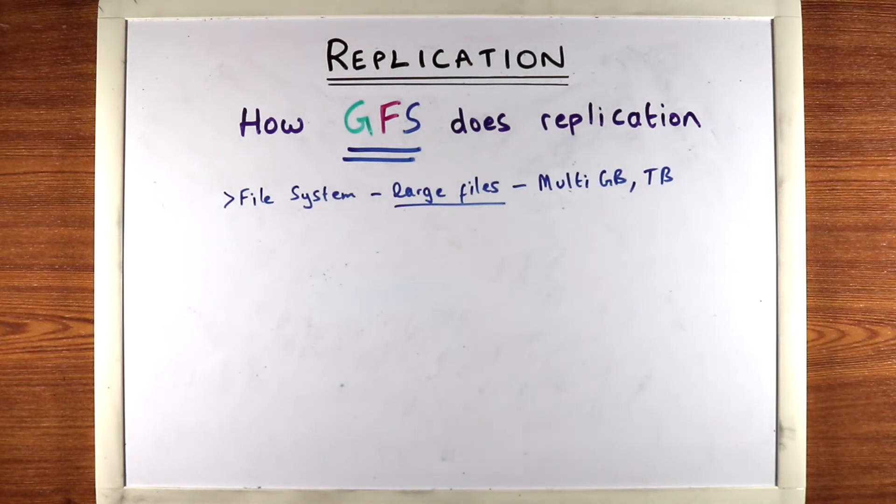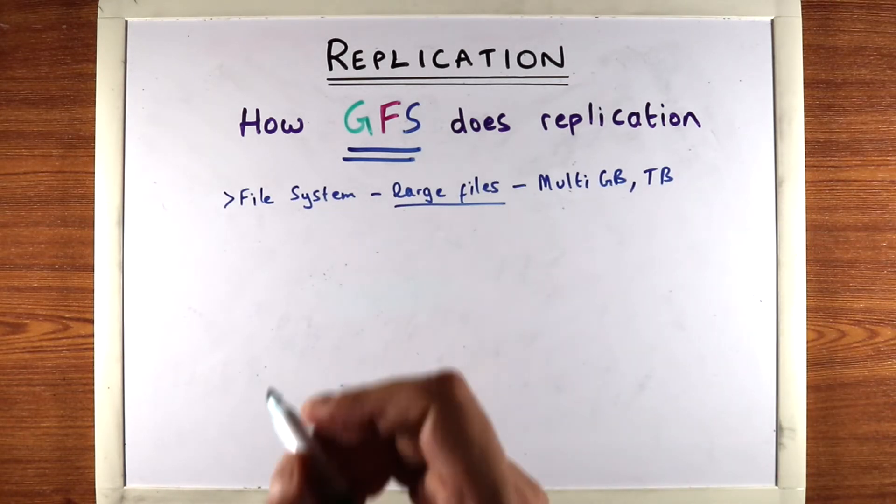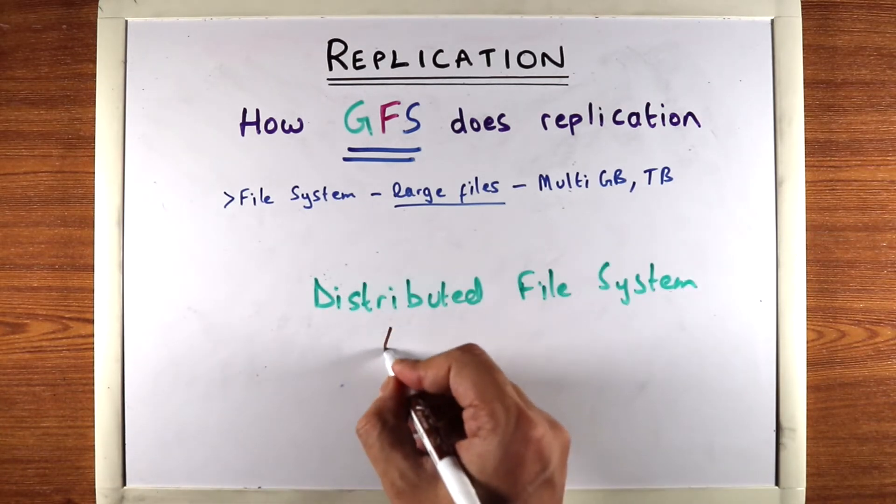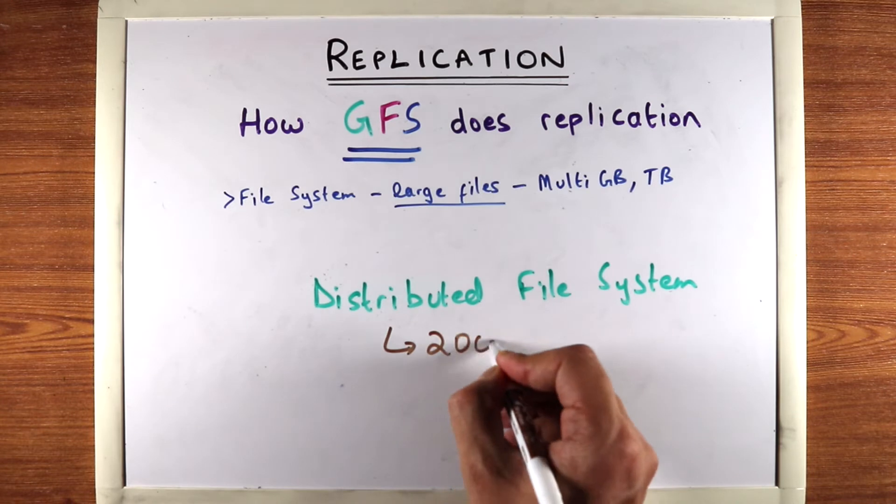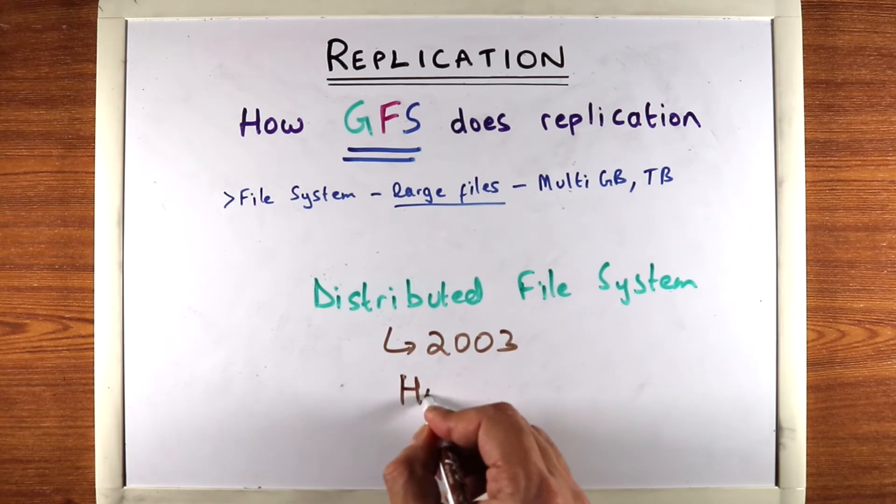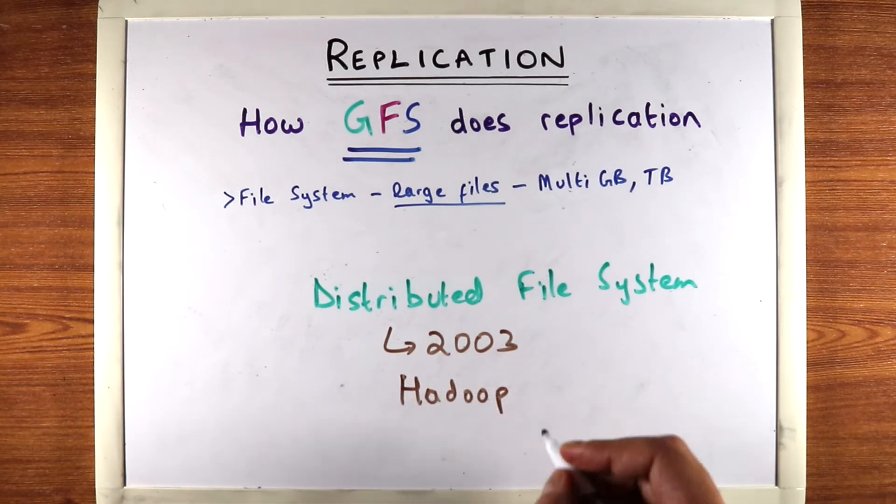So why are we looking at the Google file system? Because it is a classical example of a distributed file system. It's not a new system by any means. The paper came out in 2003, but since then a lot of systems have used this as inspiration, most notably the Hadoop file system, which is directly inspired by the Google file system and is very commonly used today.